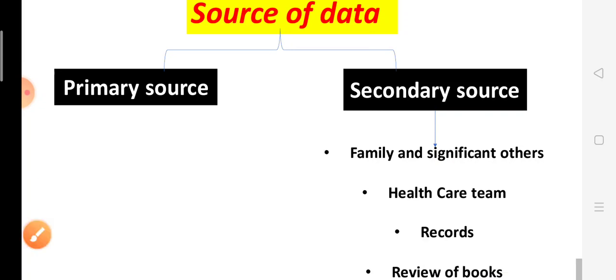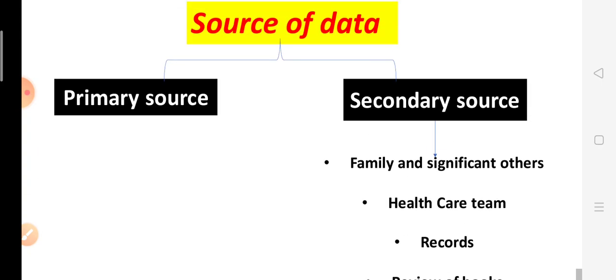In secondary sources, the health care team — doctors and nurses — who have created data is called the health care team source. Records from clients include medical records, past health patterns, immunization records, other health professionals' input, laboratory tests, and other information. Review of books provides up-to-date knowledge and is very important for nurses.